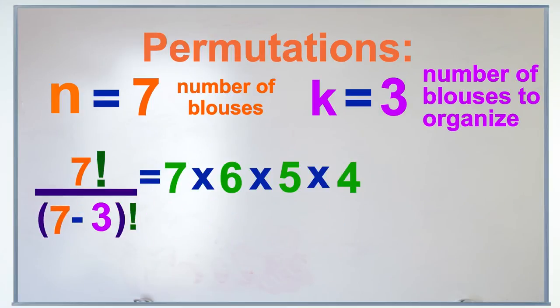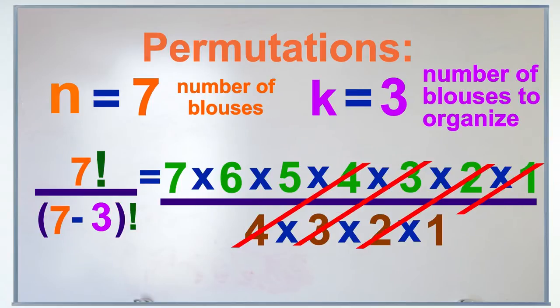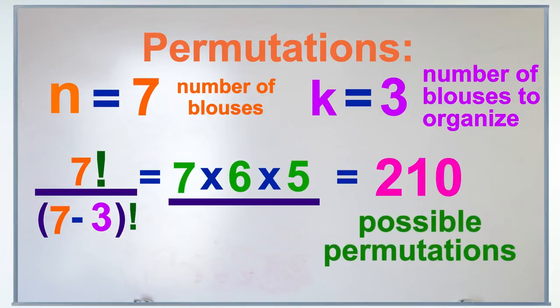Or 7 times 6 times 5 times 4 times 3 times 2 times 1 over 4 times 3 times 2 times 1. Well, the 4, 3, 2, and 1 all cancel, leaving 7 times 6 times 5, or 210 possible permutations of 3 blouses.